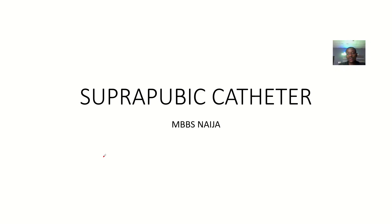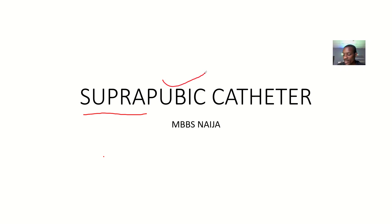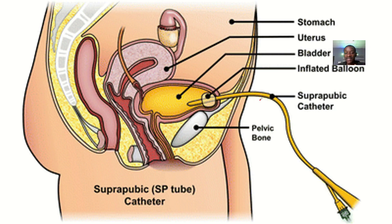The next type of catheter is the suprapubic catheter. Most catheters carry names based on their function or the region where they are inserted. 'Supra' means above, so suprapubic means above the pubic region — that is where you insert this catheter, above the pelvic bone or pubic bone. At that region you are basically targeting your bladder directly.